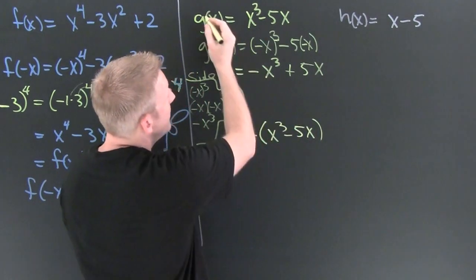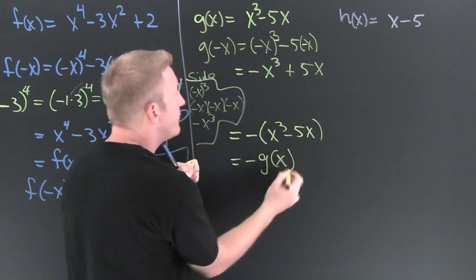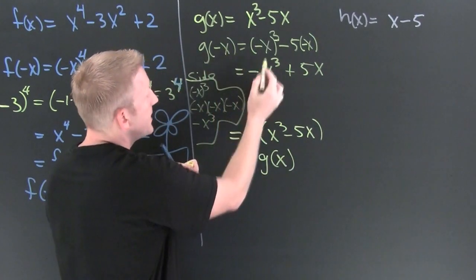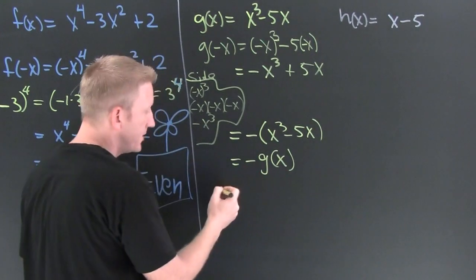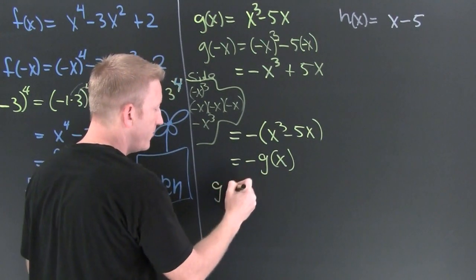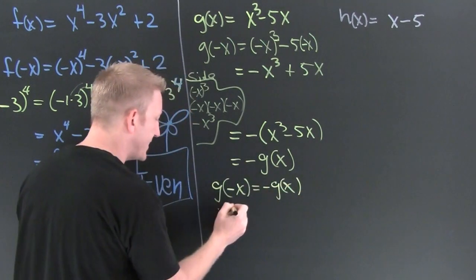But what is that? That's my original g of x. Oh, wait. So I have minus g of x. So then it follows. g of minus x is going to be minus g of x. And because g of minus x is equal to minus g of x, we can say dot dot dot.